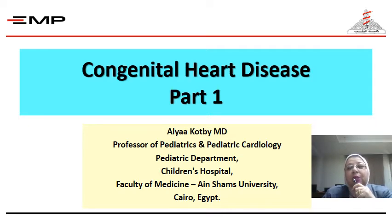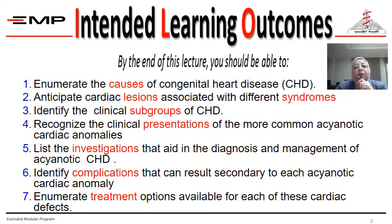I'm going to place stress particularly on the acyanotic heart disease. By the end of this lecture, you should be able to enumerate the causes of congenital heart disease, and we're going to understand why we have to know the causes. Anticipate cardiac lesions associated with different syndromes, so that when you see a patient with a particular syndrome, you can say almost probably I have to exclude this type of congenital heart. Identify the clinical subgroups of congenital heart disease and how they are classified. Recognize the clinical presentations of the more common acyanotic cardiac anomalies.